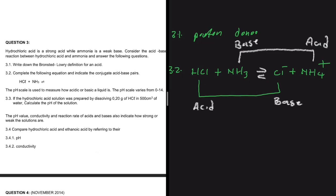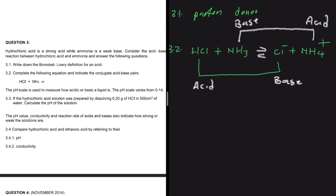Moving to the next question, 3.3. The pH scale is used to measure how acidic or basic a liquid is. The pH scale varies from 0 to 14. We already know that. The question says if the hydrochloric acid solution was prepared by dissolving 0.2 grams of HCl in 500 cm³ of water, calculate the pH of the solution.